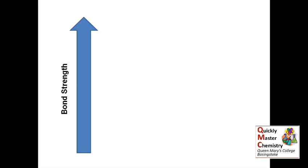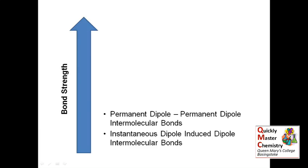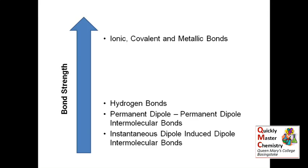Finally, we just need to compare instantaneous dipole-induced dipole intermolecular bonding with other types of bonding. What we see here is that they are very much at the bottom of the heap — they are the weakest type of bonding that we consider. Weaker than permanent dipole-permanent dipole intermolecular bonds, and definitely weaker than hydrogen bonds. However, it's important to point out that all of these types of intermolecular bonding are considerably weaker than the ionic, covalent and metallic bonds considered earlier in the course.